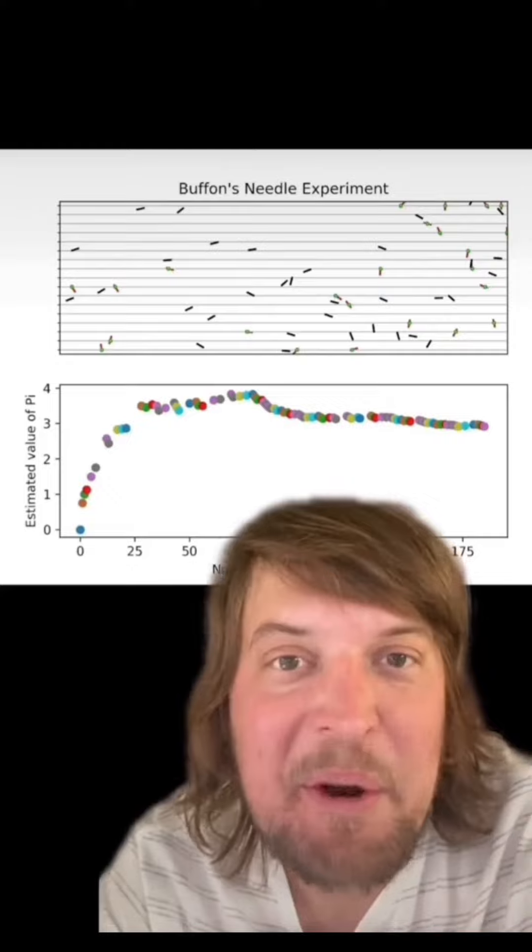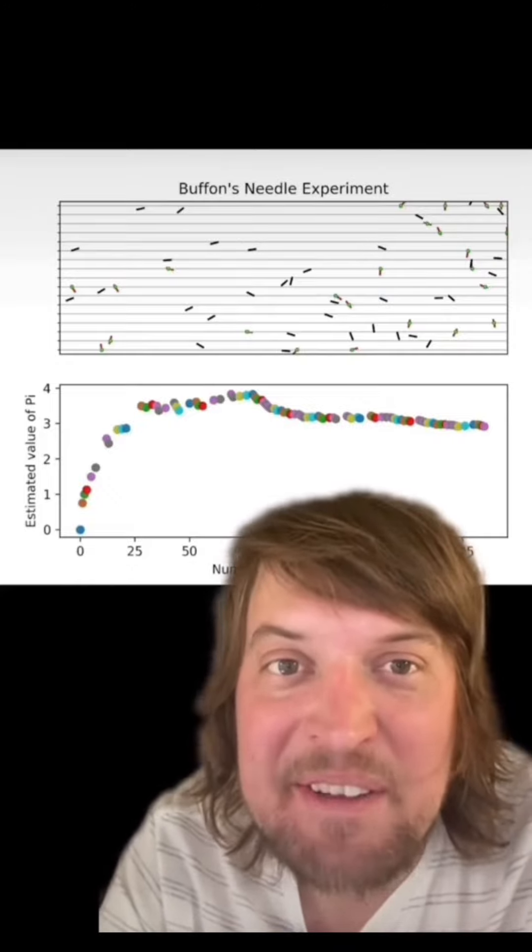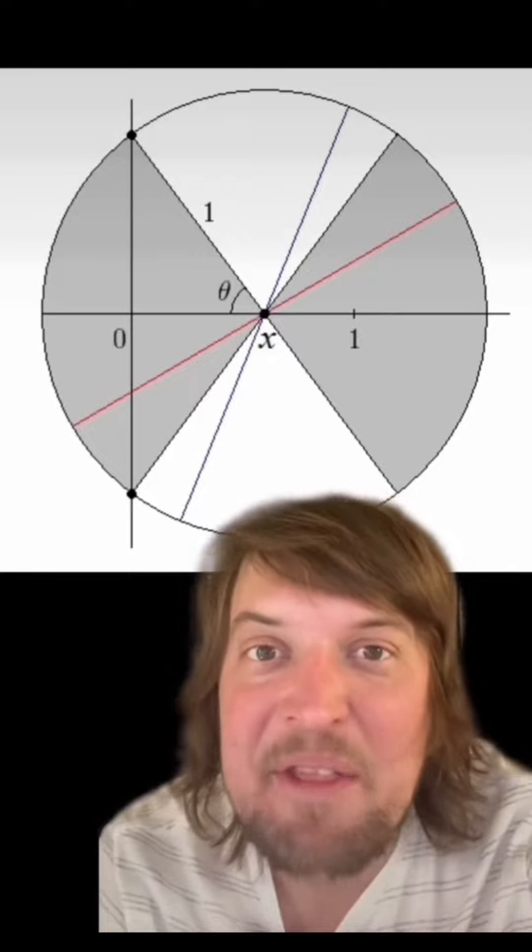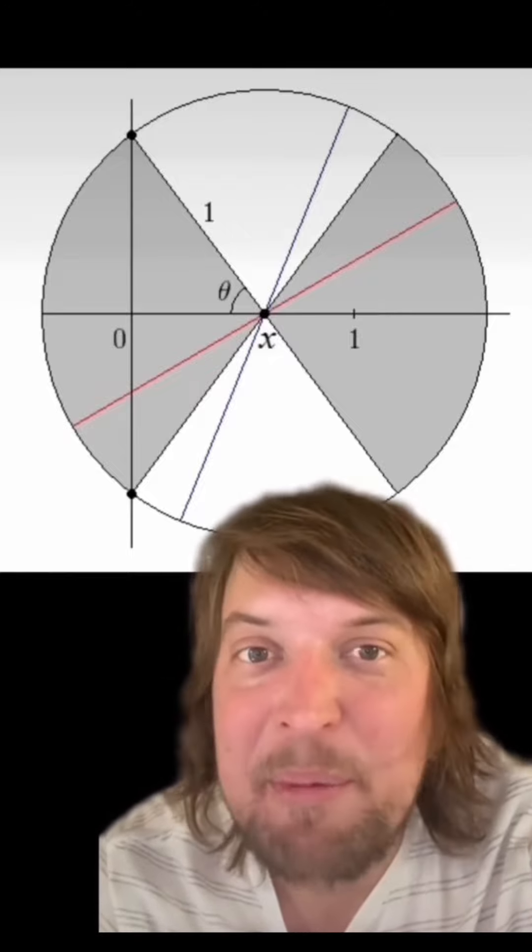Which is pretty dang close already to the value of pi. And the more you throw, the more the number will get closer to pi. It's something to do with all the possible angles that the stick can be in and how that compares to the distance it can be from the lines.